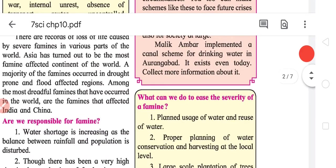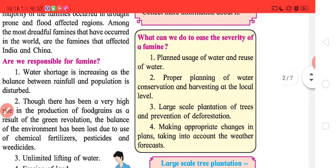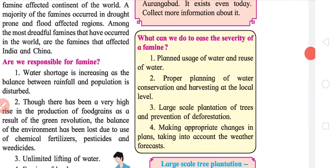So what we do? This is a box. What we do: plant usage of water and reuse of water. For example, if you cook rice, the water is really good for skin. Proper planning of water conservation and harvesting at local level. If the building has a good enough and wide roof, you can put in water harvesting. Don't unnecessarily allow the taps to flow. Large scale plantation of trees and prevention of deforestation. Making appropriate changes in plans taking into account the weather forecast.